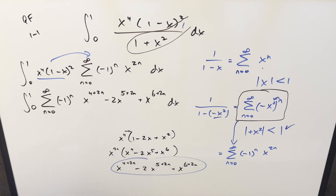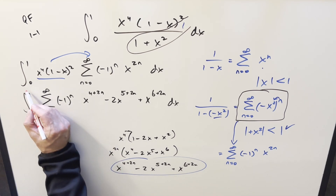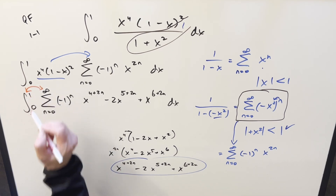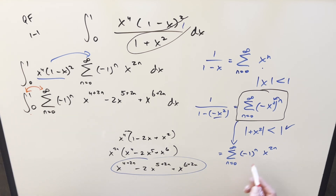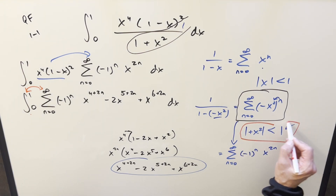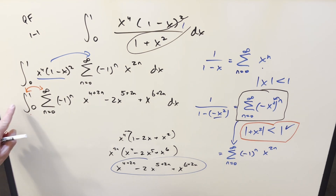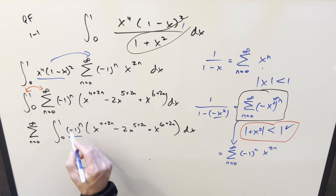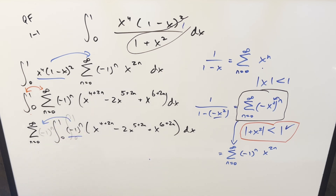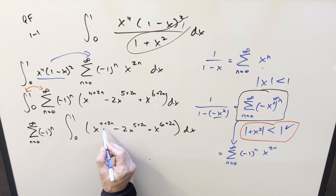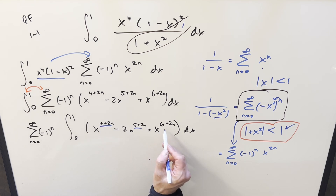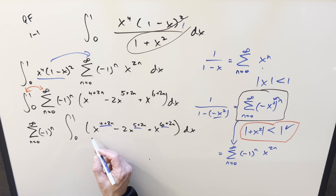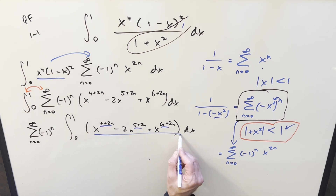Let's put this back into the sum and reverse the order of the integral with the sum. The reason we can do this is because we've verified absolute convergence. When we have absolute convergence, that allows us to flip these. The (minus one) to the n is just a constant inside the integral with respect to x, so we can bring it out front. All our exponents are constant values with respect to x.